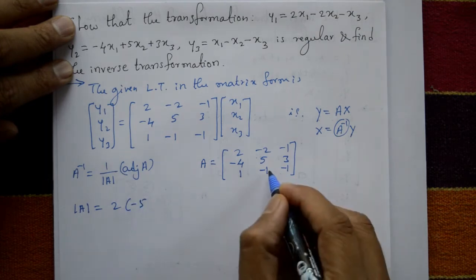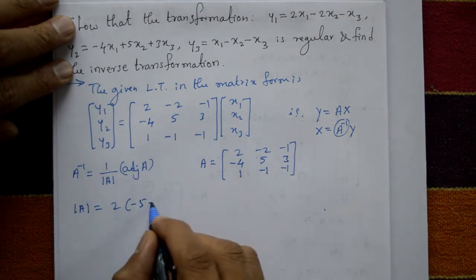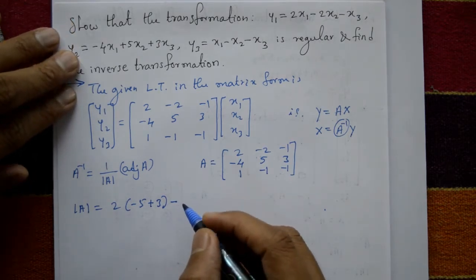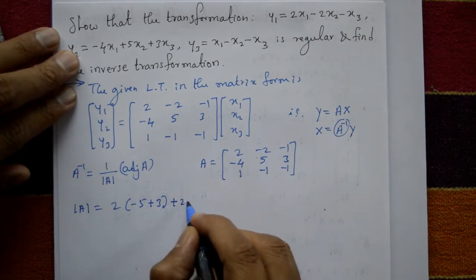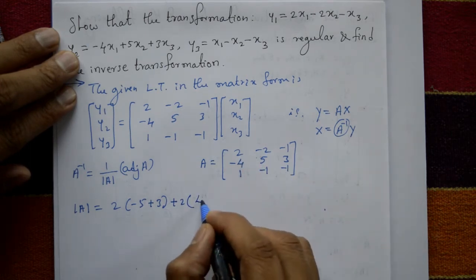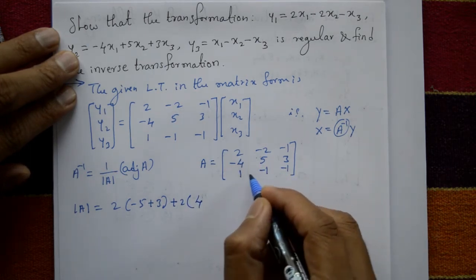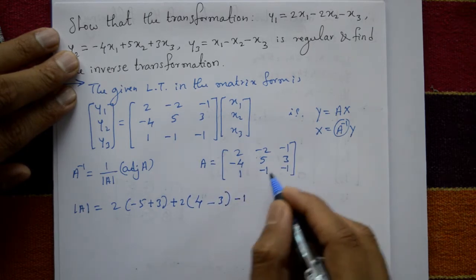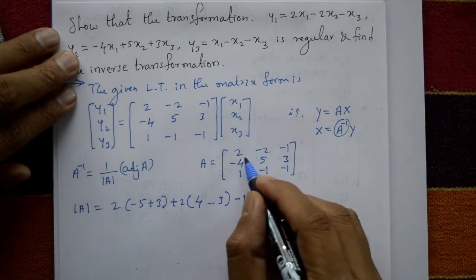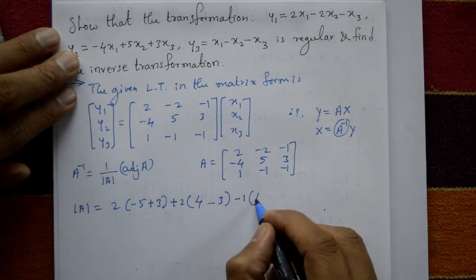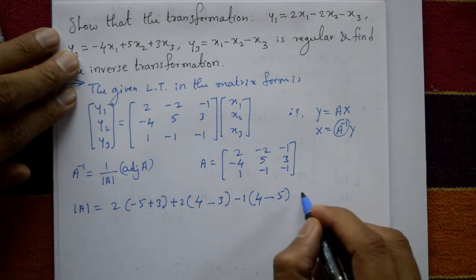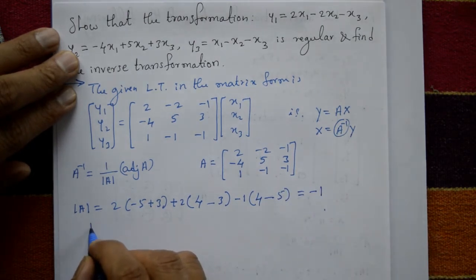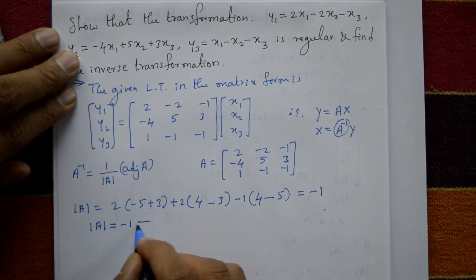The determinant of A: expanding along the first row — 2 × (5×(-1) - 3×(-1)) = 2×(-5+3) = 2×(-2) = -4; minus (-2) × ((-4)×(-1) - 3×1) = (-2)×(4-3) = -2×1 = +2; plus (-1) × ((-4)×(-1) - 5×1) = (-1)×(4-5) = (-1)×(-1) = +1. Total determinant = -4 + 2 + (-1) = ... this equals -1.